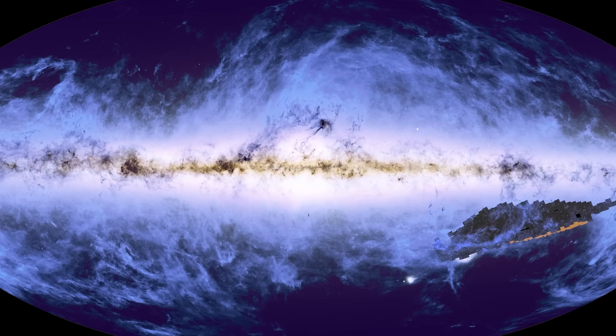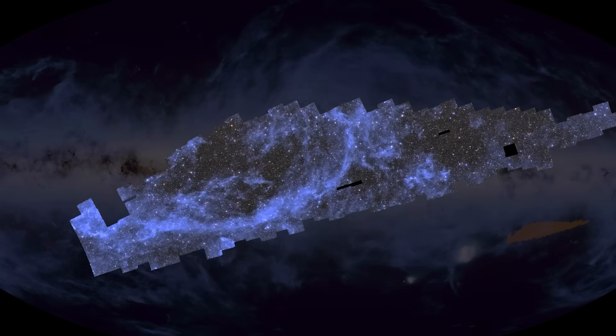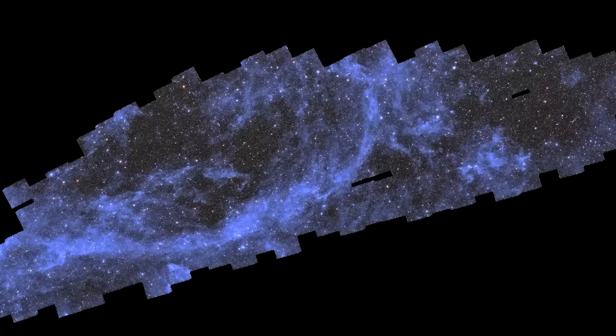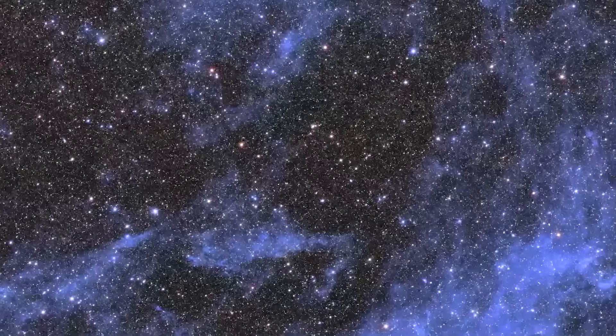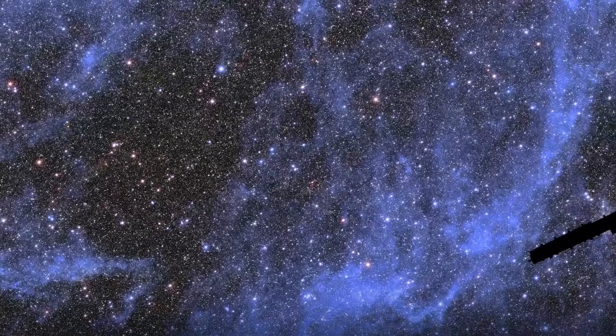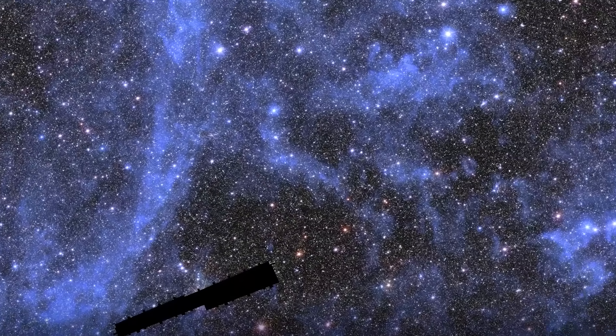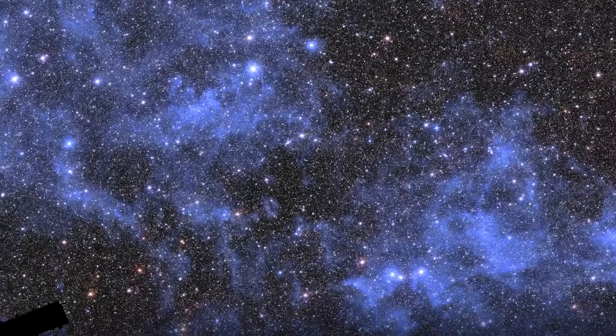Beyond the deep field scans, Euclid has also released a spectacular 208-gigapixel mosaic, one of the largest and most detailed views of the sky ever created. This massive image covers a portion of the southern sky that's over 500 times the size of the full moon as seen from Earth.